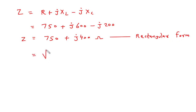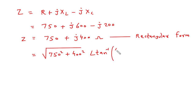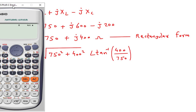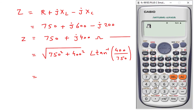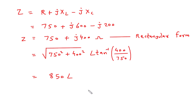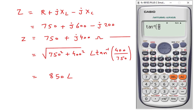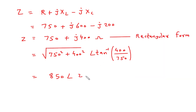Now we have to convert this into its equivalent polar form. The equivalent polar form is the square root of (750 squared plus 400 squared) at an angle of tan inverse of 400 divided by 750. So it will be under root of 750 squared plus 400 squared at an angle of tan inverse of 400 by 750, which is 28.07 degrees. So this is the value of Z in ohms — this is the polar form.